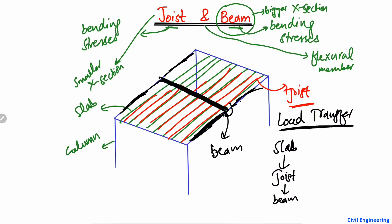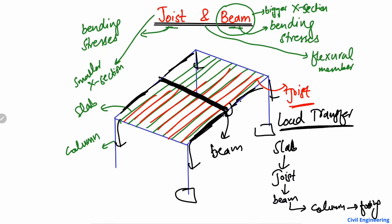The load is then transferred to the four columns, and from the columns the load is transferred to the footing or foundation. There are different kinds of footings depending on the design — for example, a single isolated footing, a strip footing, or maybe a pile foundation. It depends on the load acting on the column and the bearing capacity of the soil.